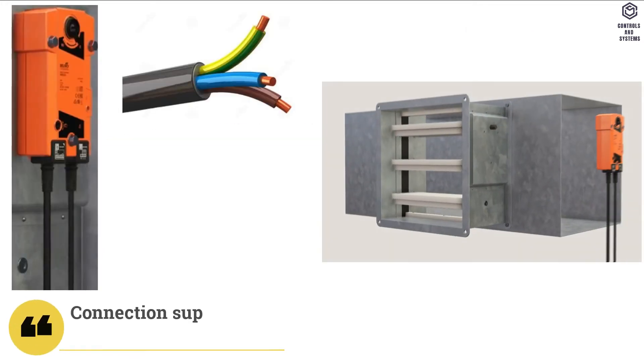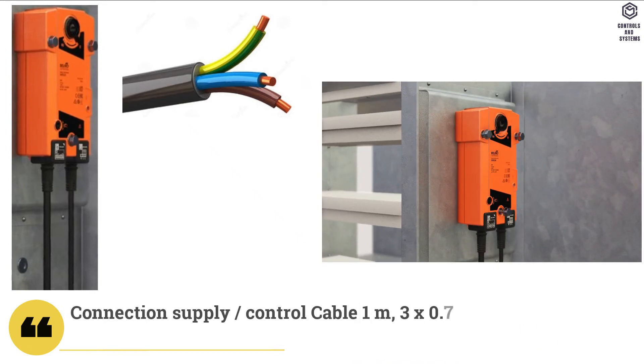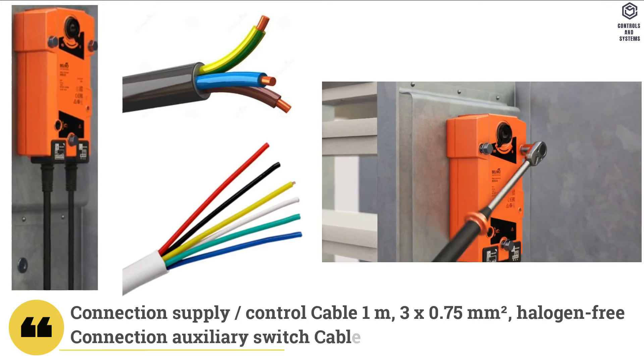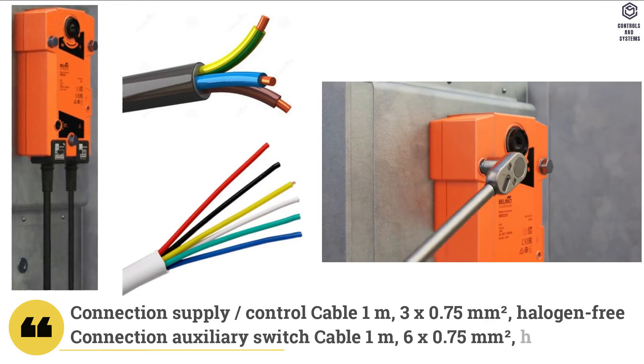Wiring connection: connection supply and control cable is 1 meter, 3 wire, 0.75 mm square. Connection auxiliary switch cable is 1 meter, 6 wire, 0.75 mm square.